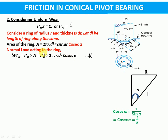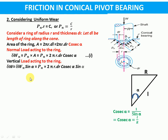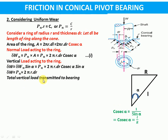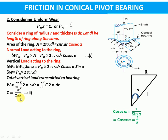As in the previous derivation, we will take the vertical load acting on the ring as dWn times sin alpha, so it becomes pn times 2πr·dr·cosecant alpha times sin alpha. The sin alpha and cosecant alpha cancel each other, giving vertical load acting on the ring as 2πr·dr·pn, or pn times 2πr·dr. Integrating from 0 to R, total vertical load transmitted to the ring will be the integral from 0 to R of pn times 2πr·dr. In place of pn we substitute c by r, cancelling r, giving the integral of c times 2π dr, so c equals W upon 2πR. Let this be equation 2.